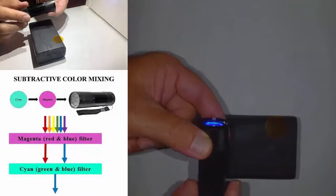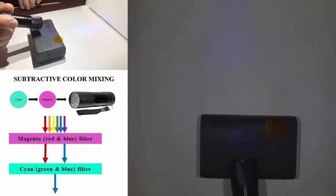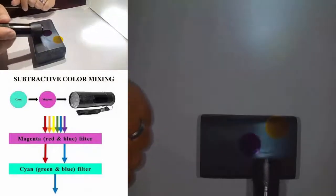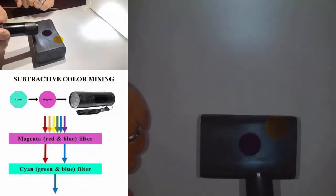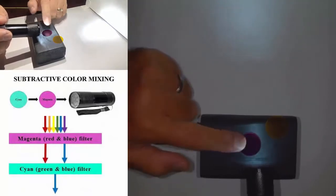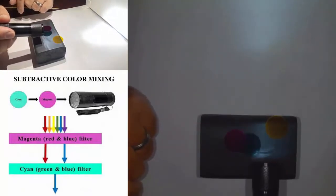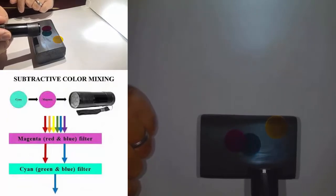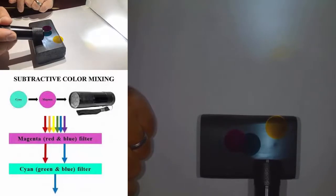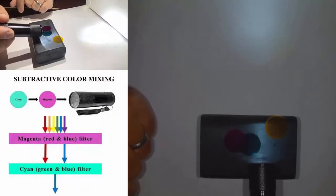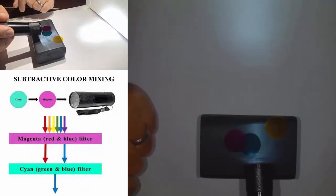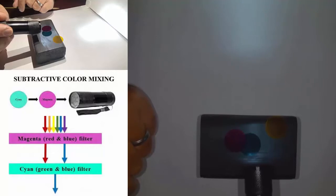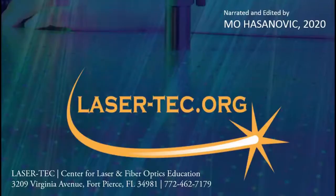You can repeat this subtractive experiment with the other two combinations: combine magenta and yellow to see what primary color is produced, and combine cyan and yellow to see what primary color results. As a final question, think about what happens if you combine all three secondary colors. And to close this lab, consider where additive and subtractive color mixing are applied in the real world.